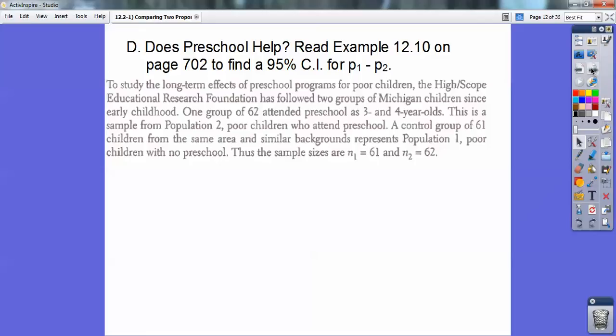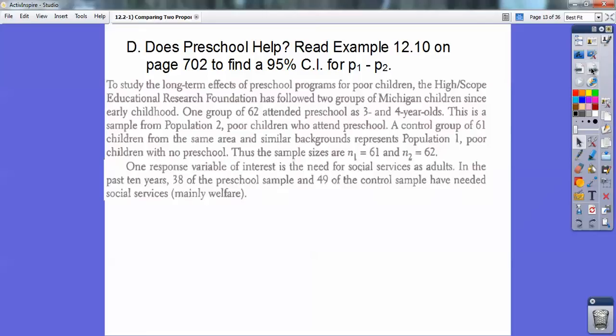Thus, the sample sizes are n1 = 61 and n2 = 62. Our response variable of interest is the need for social services, mainly welfare, as an adult. In the past 10 years, 38 of the preschool sample and 49 of the control sample had needed social services.